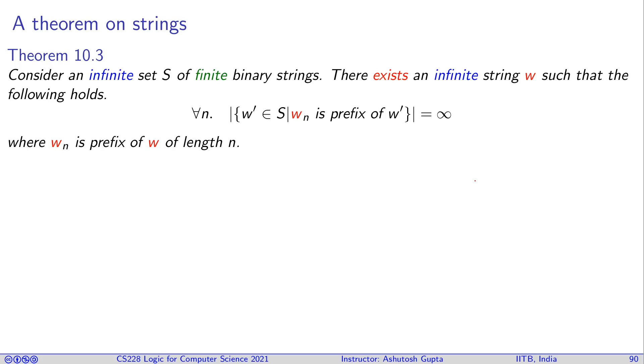Let us prove this theorem, which is a theorem about strings rather than about formulas. And then we will use this theorem to finally prove our theorem. So how does this theorem work? Let us suppose you have an infinite set of finite binary strings. What are the binary strings? The strings that contain 0, 1, 0, 1, 1, 0, things like that. They are all finite. The set is infinite. So there exists an infinite string W.